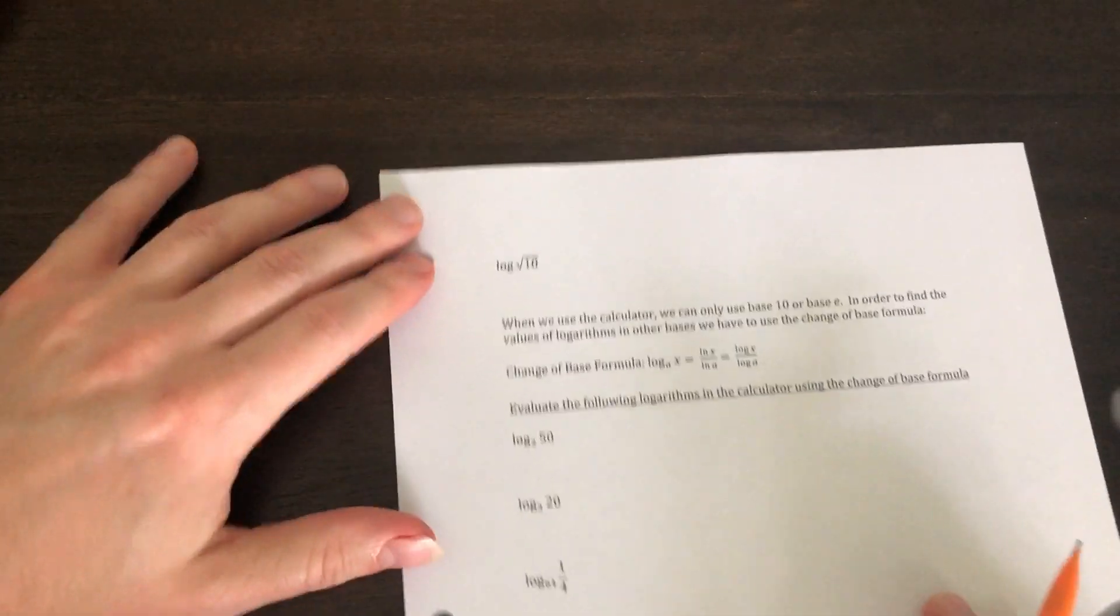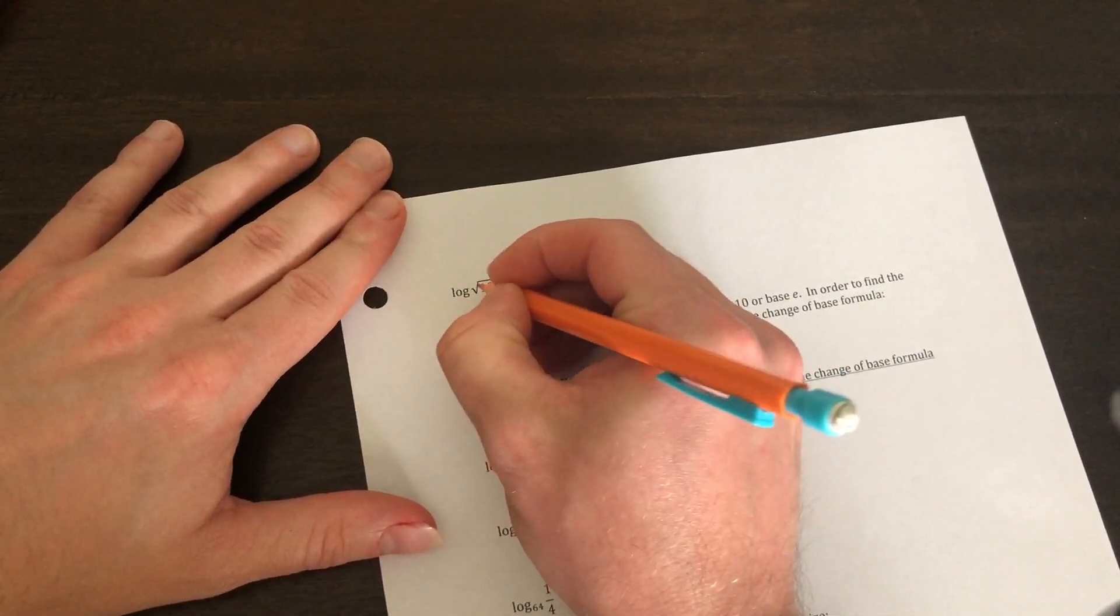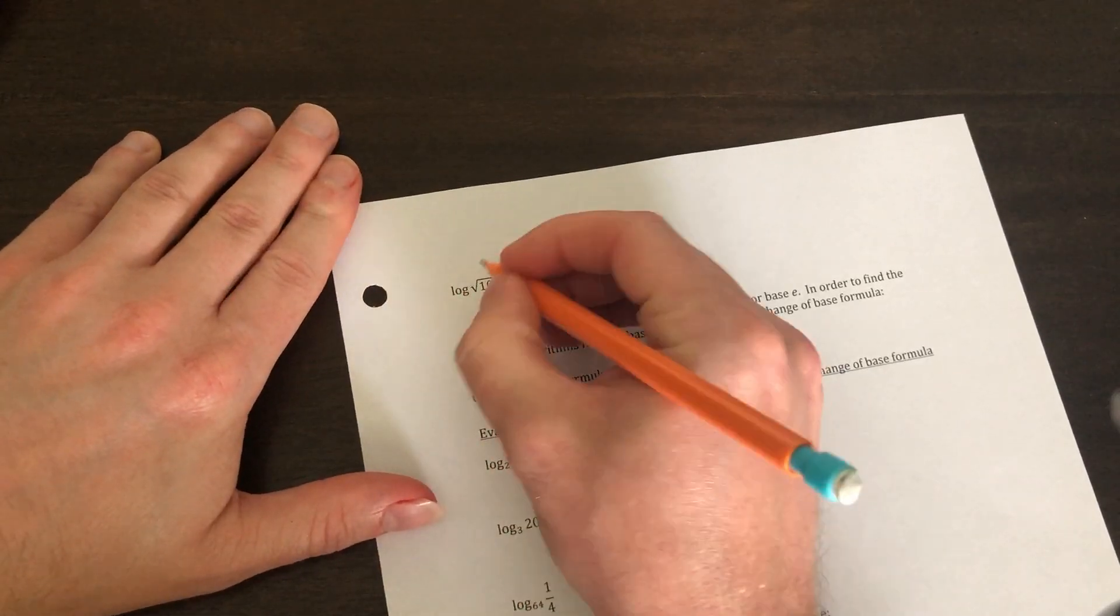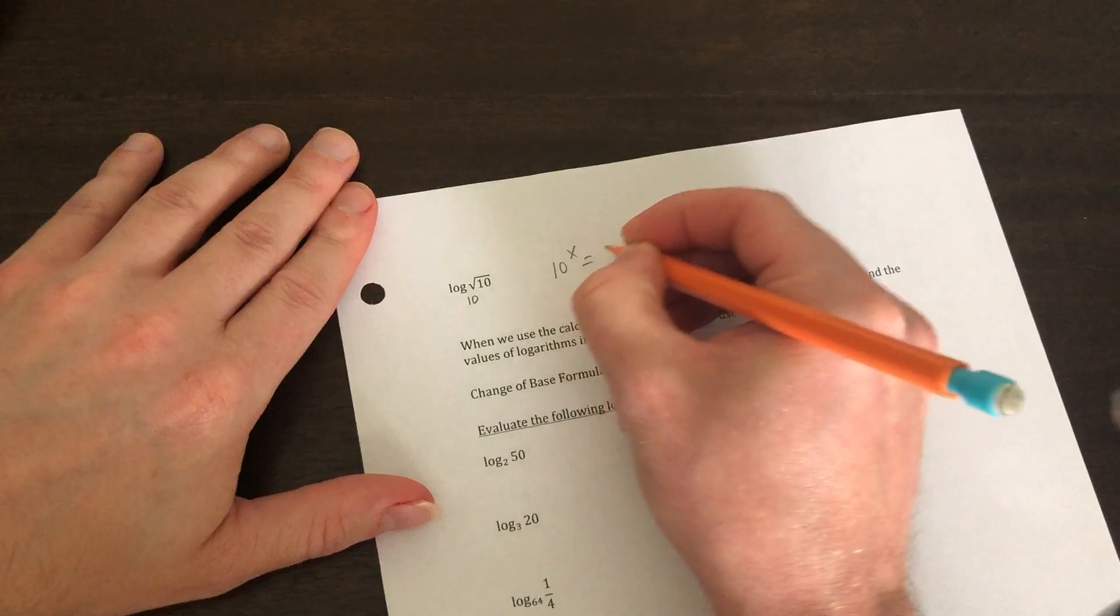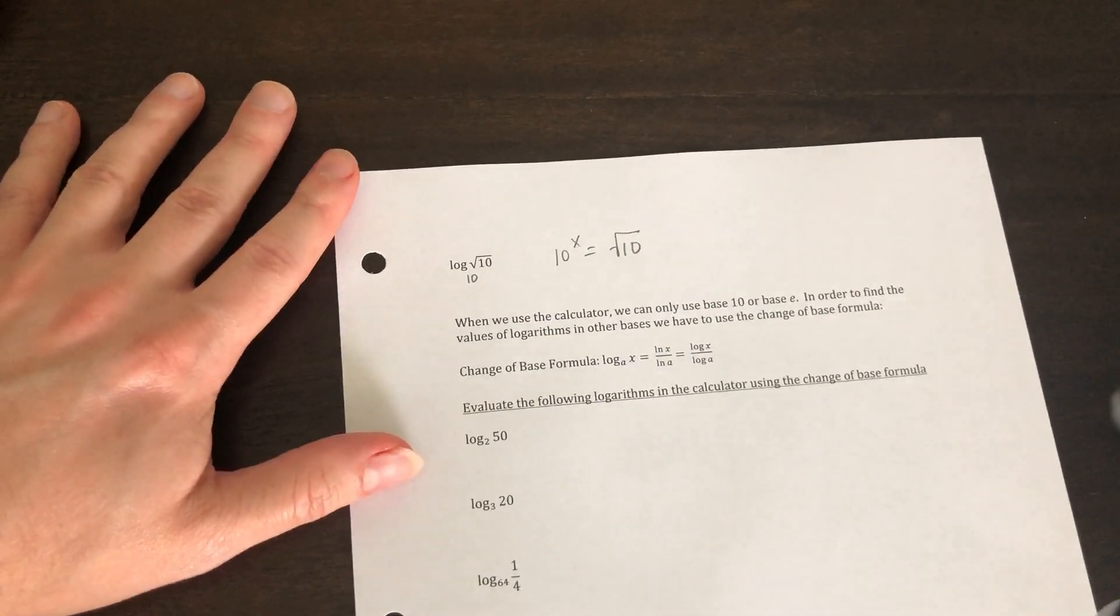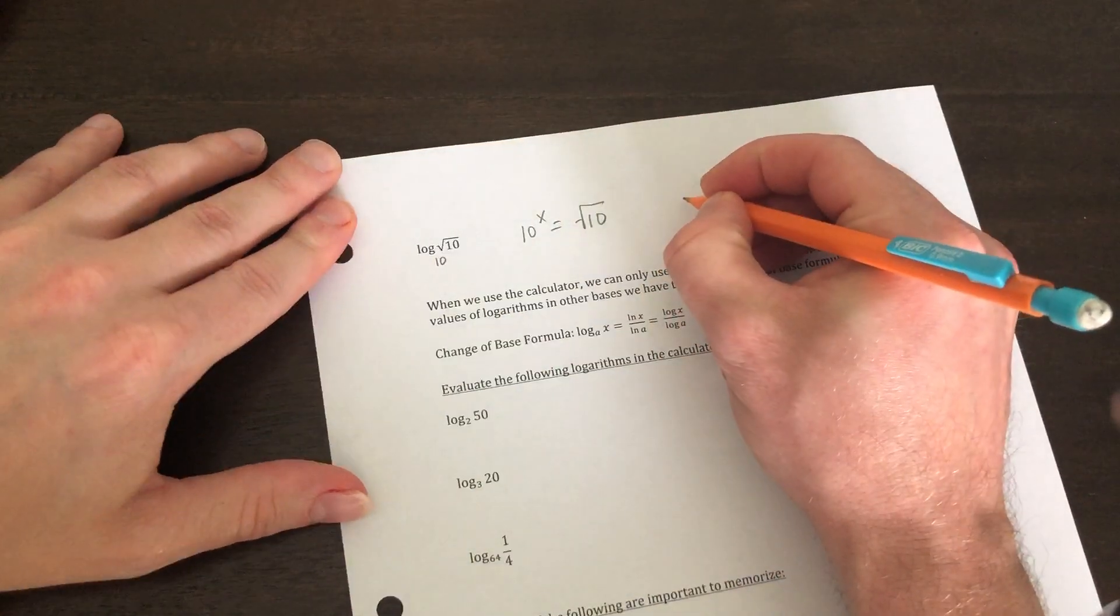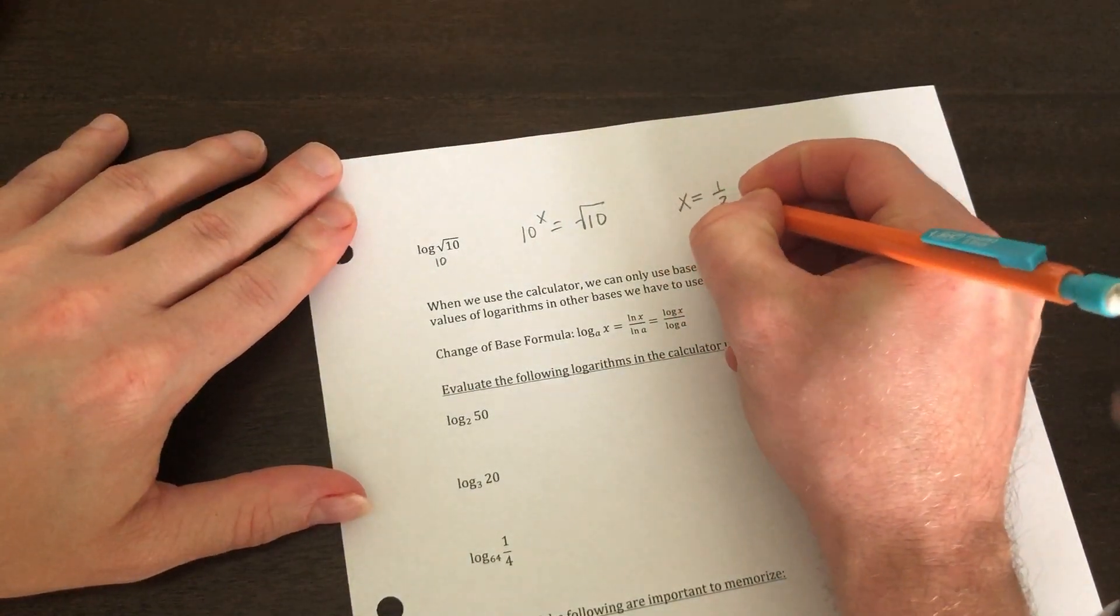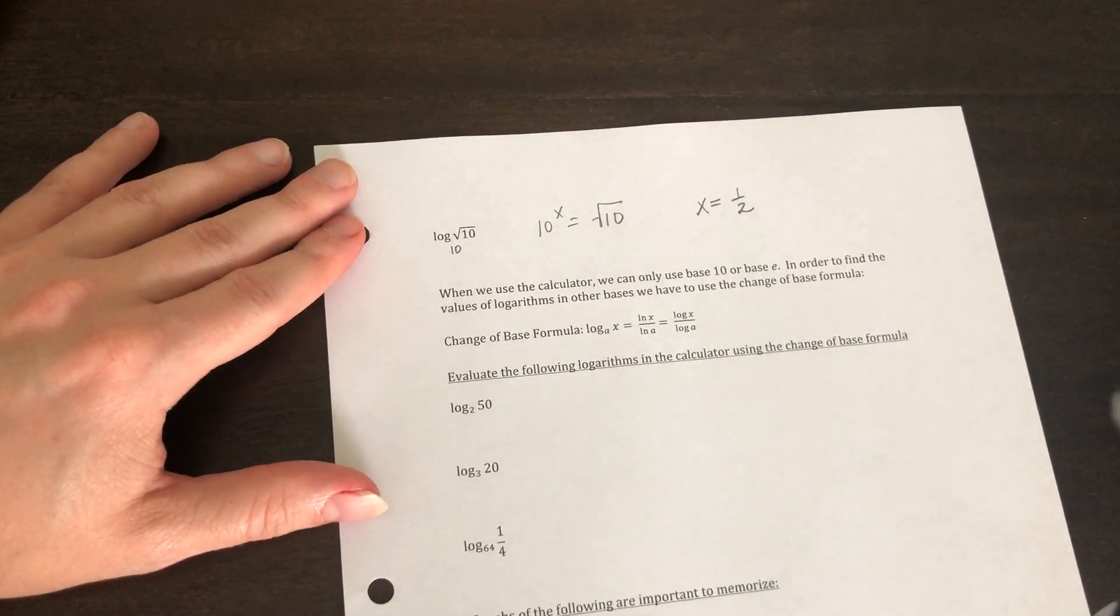And the last one in this section, log of square root of 10. So if there's no base given, we're going to assume it's base 10. So we're going to say 10 to the x power is equal to square root of 10. Now how do I figure out what power square root is? Well, it's the one half. So 10 to the one half power gives you square root of 10.